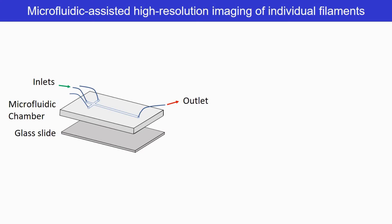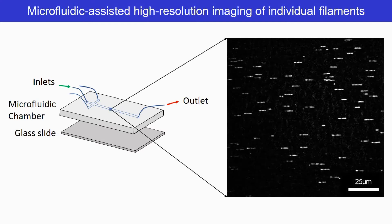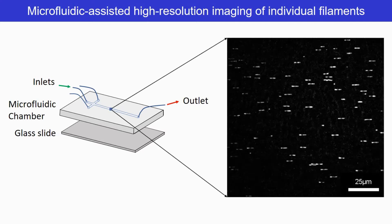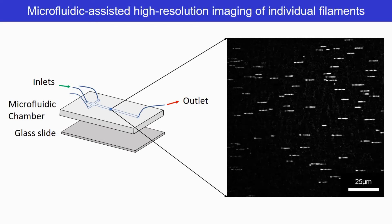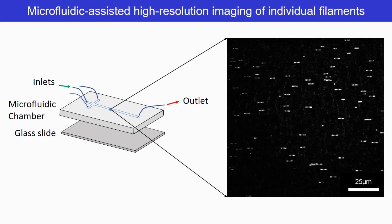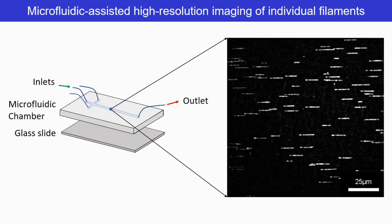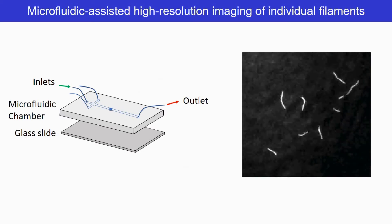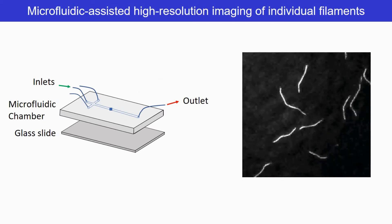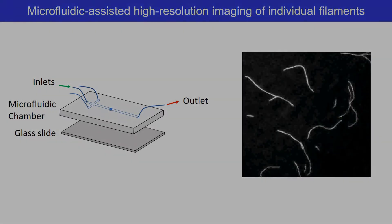To study these molecular reactions, we use a combination of high-resolution microscopy and microfluidics. Using a microfluidic flow cell, we can simultaneously observe the dynamics of hundreds of actin filaments aligned in the flow. High throughput and ease of data analysis are a huge advantage over traditional approaches where filaments randomly grow on a surface.